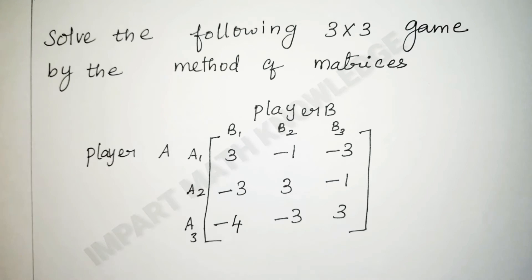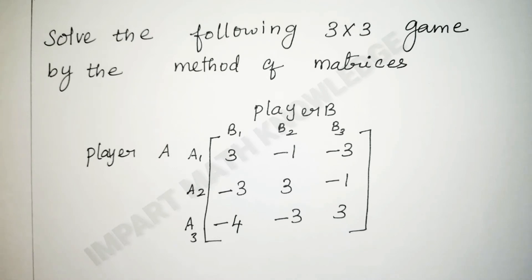Let us move on to the problem. Solve the following 3×3 game by the method of matrices. In the given problem, a saddle point does not exist. So we have to go for the mixed strategy to find the value of the game. Here I am going to use the matrix method.